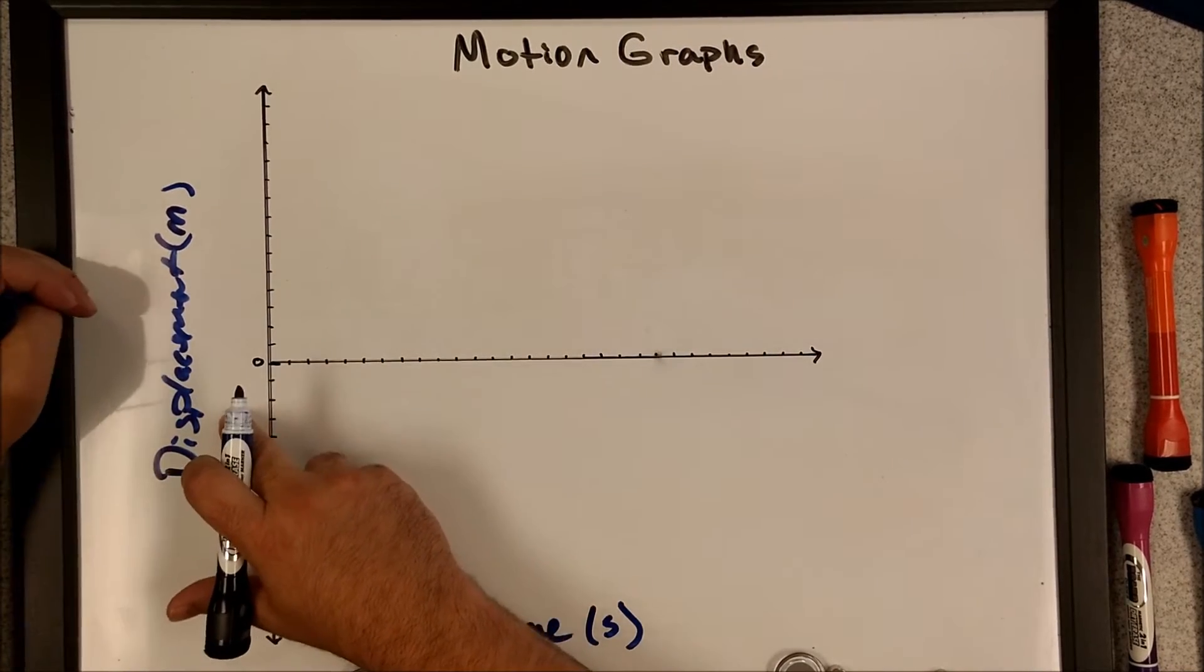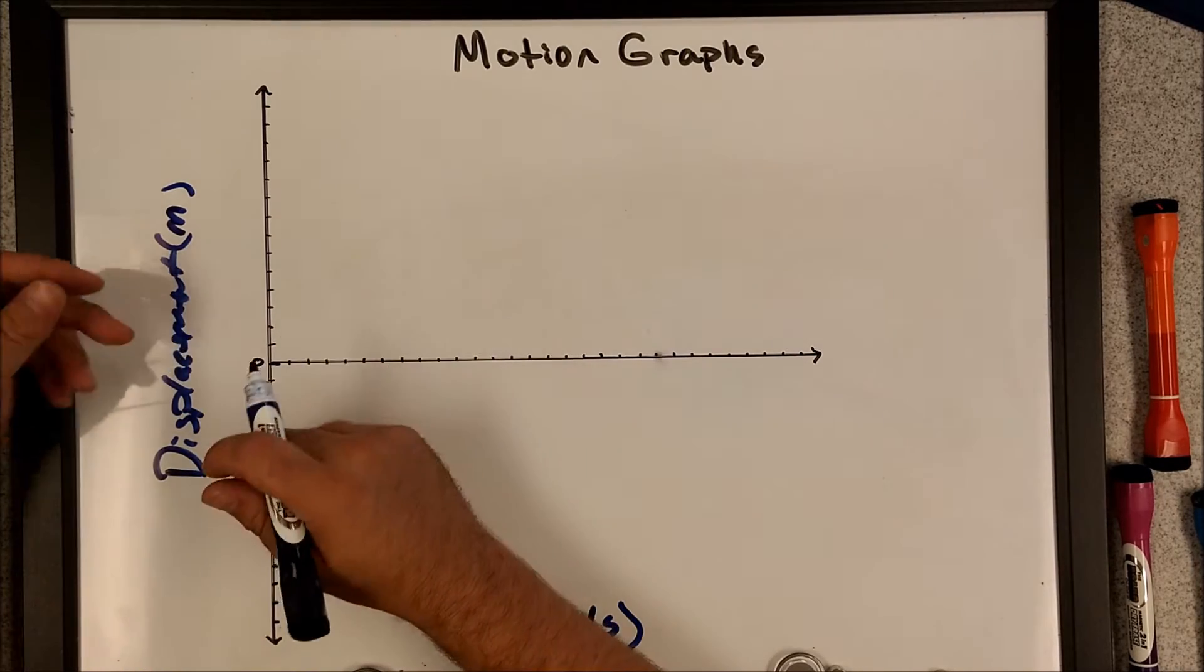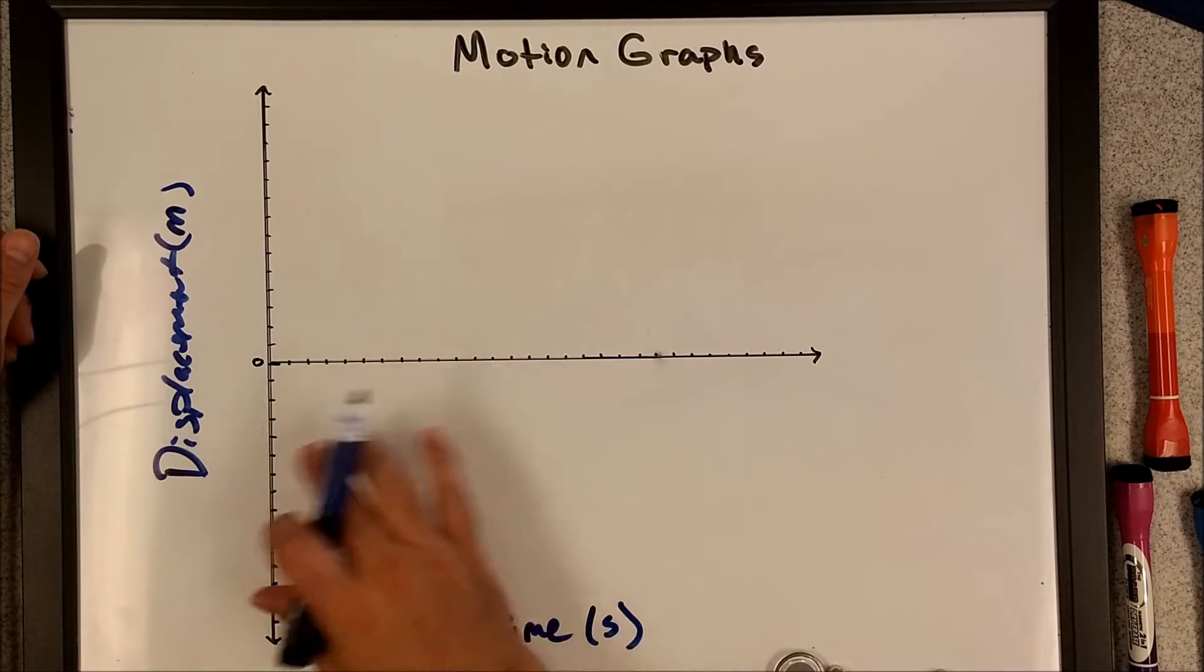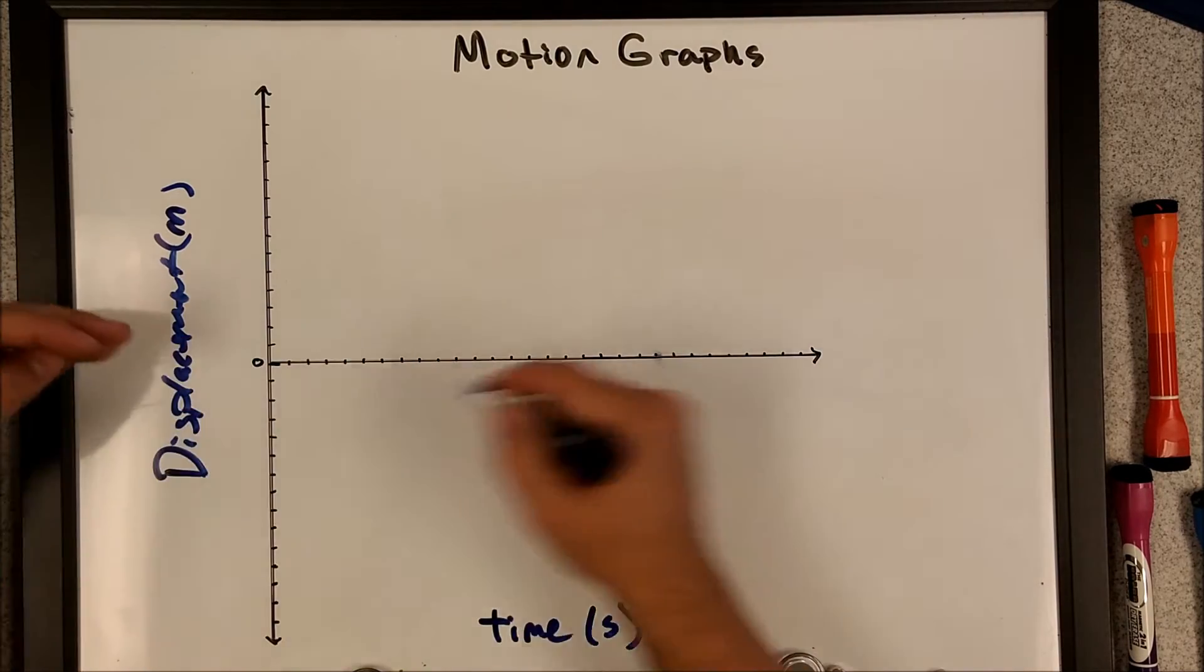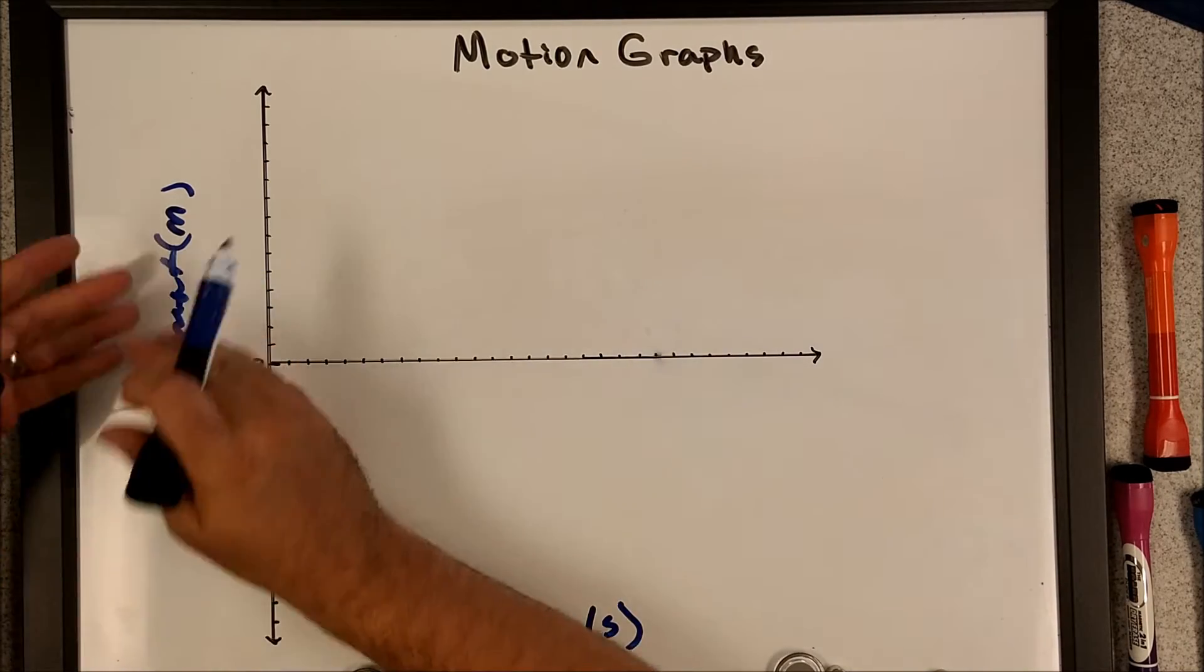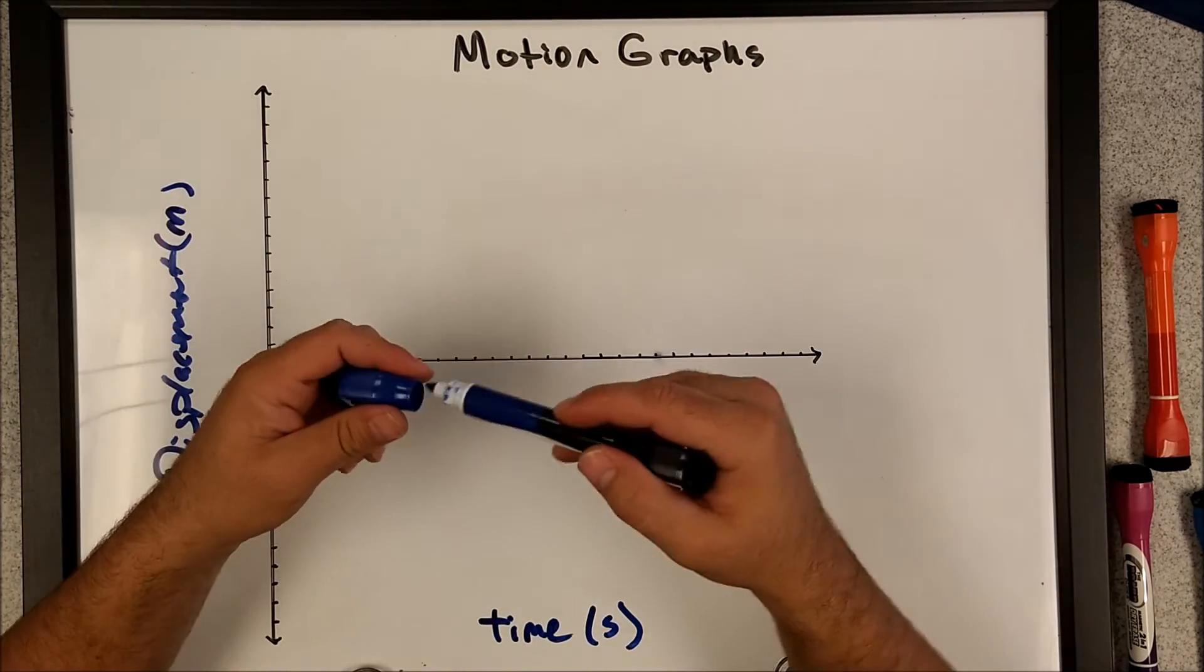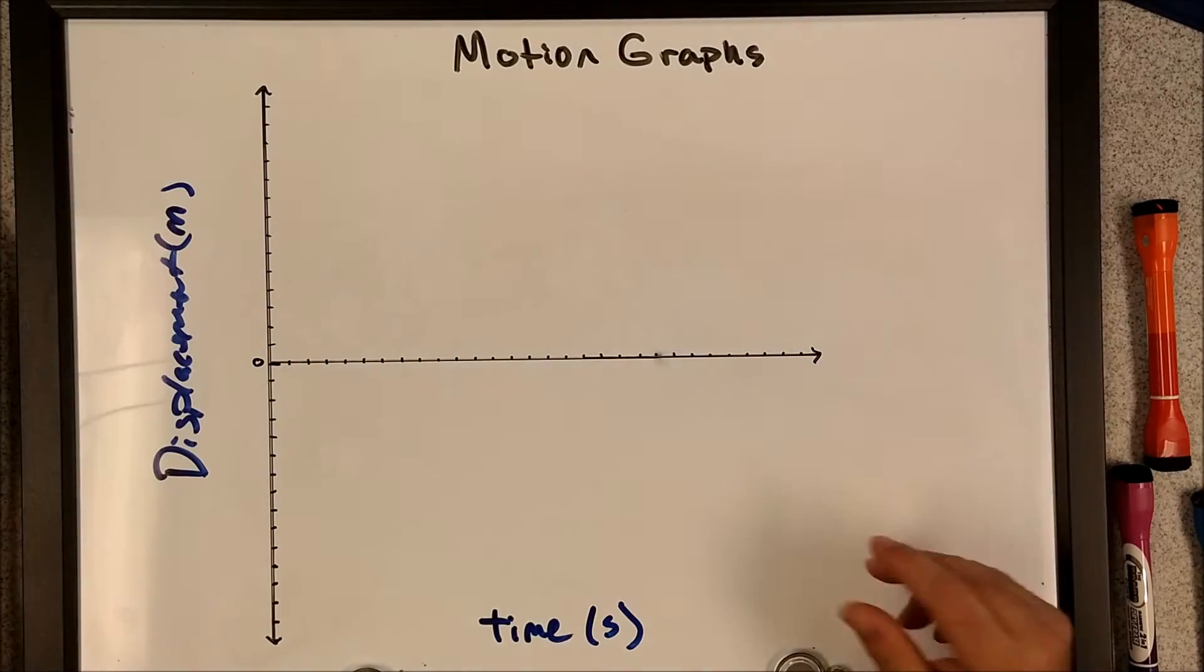So you've got displacement versus time, my y versus x. I need you to understand that displacement sometimes has the variable x given to it, or the variable y given to it, or z, or other variables, and you might think, oh, x should go on the x-axis, but that's not it. This is the coordinate system, x, y-axis. The variable x has nothing to do with the actual axis itself, although it can. Sometimes we'll use x to describe the motion along the x-axis, right?